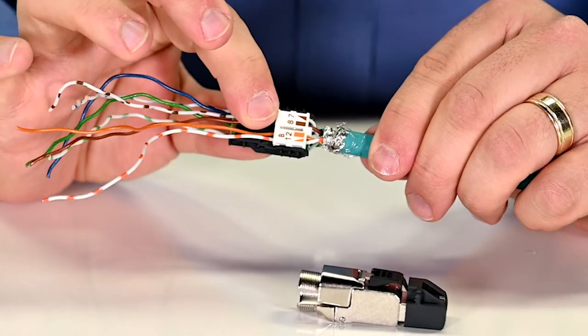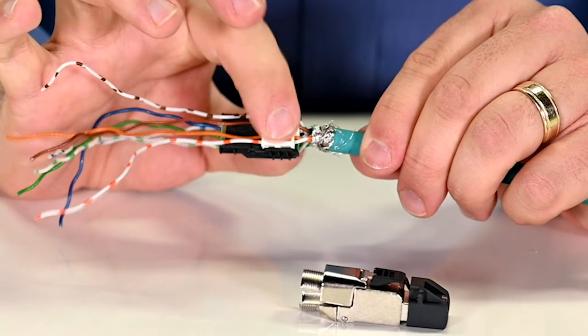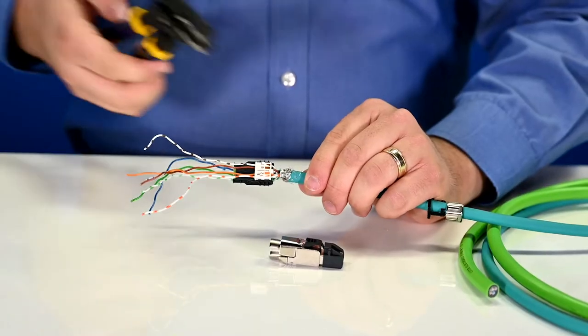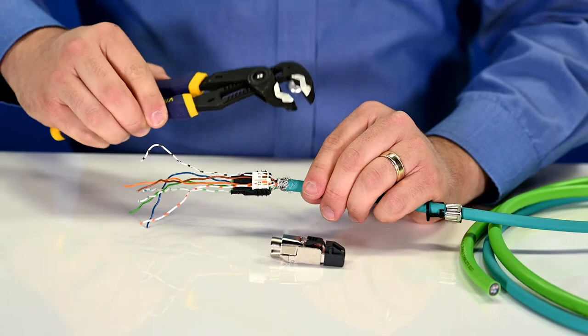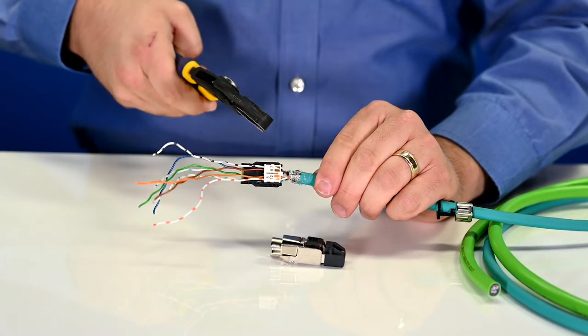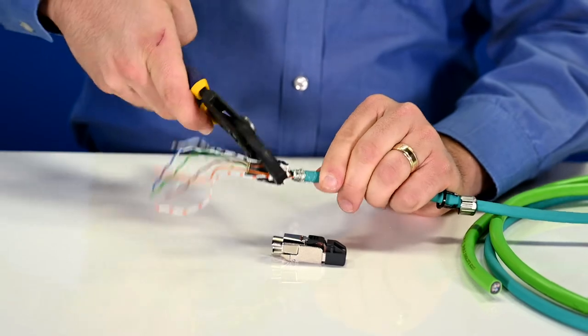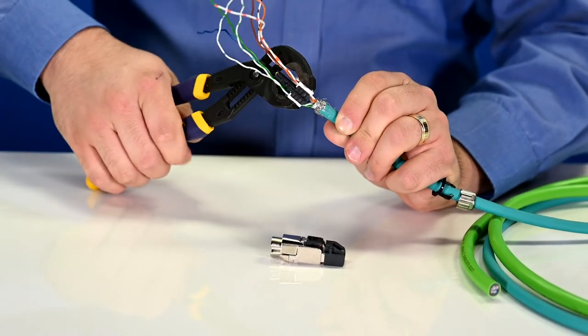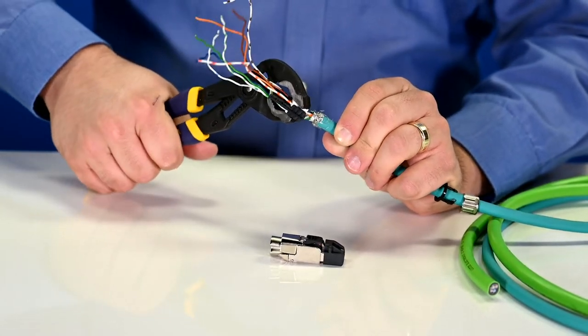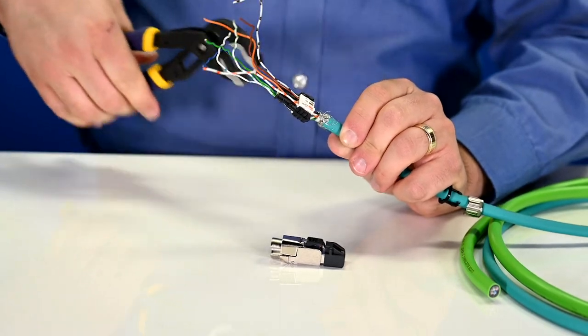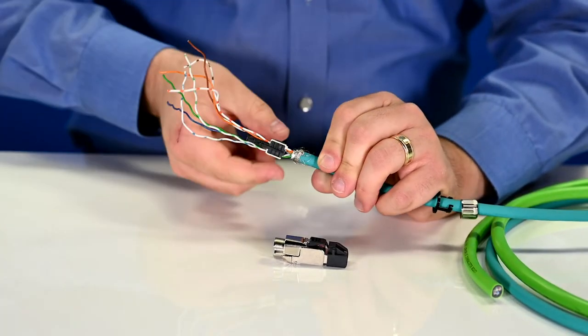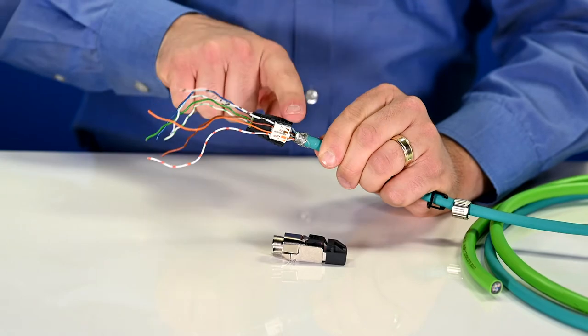Now that we have that nice and tight, it's time to engage those contacts that we talked about. And all you need to do this is a pair of channel locks or something else that applies parallel clamping force. So we want something that's going to put pressure on either side of that connector, and we simply clamp straight down. Make a nice firm connection, and you see that also loosens up this protective plastic housing.